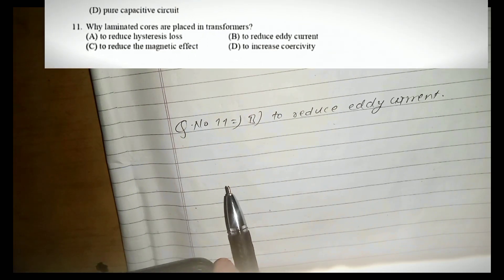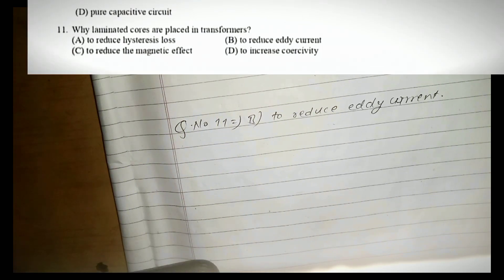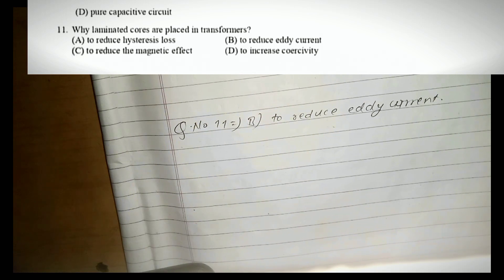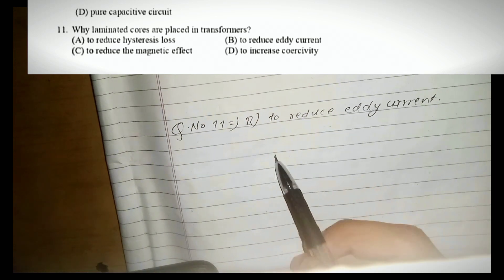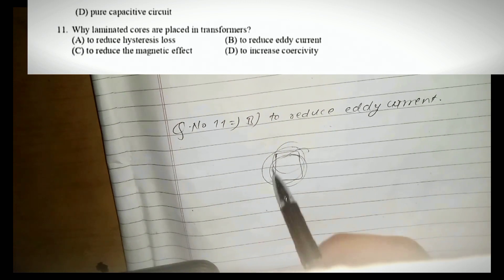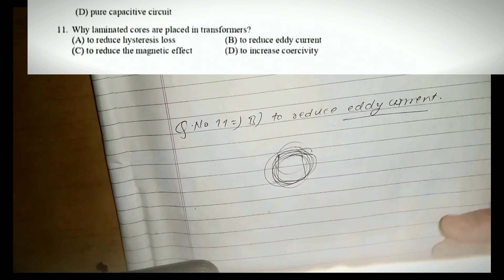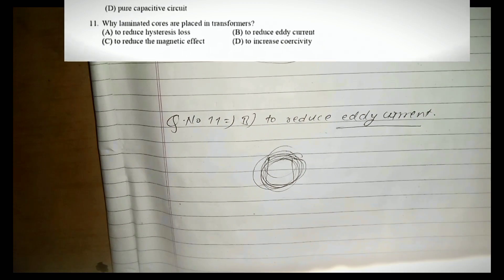Question number eleven: why is a laminated core placed in a transformer? The laminated core is used to reduce eddy current losses.